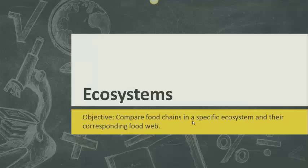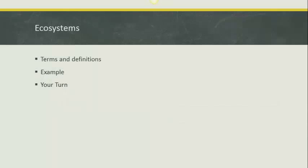We're going to continue our study, and our objective is to compare food chains in a specific ecosystem and their corresponding food web. We're going to go over some terms and definitions, an example, and then it'll be your turn.